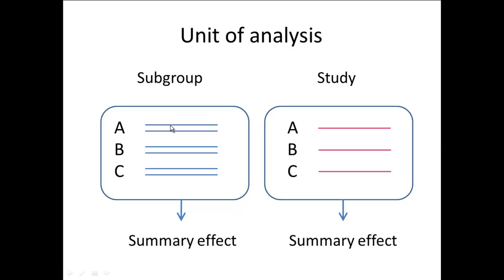Within study A, the impact of the intervention is reported separately for females and for males. Within study B, we have a line for females and one for males, and the same within study C. One option is that we can simply treat each of the subgroups as though it were a separate study. In this example, we would have basically six lines, each treated as a separate study, and we combine those to get an overall summary effect.